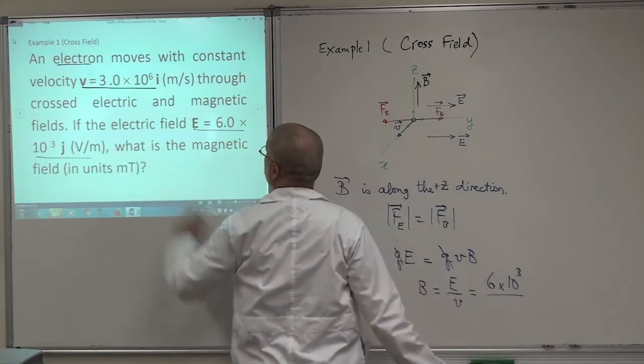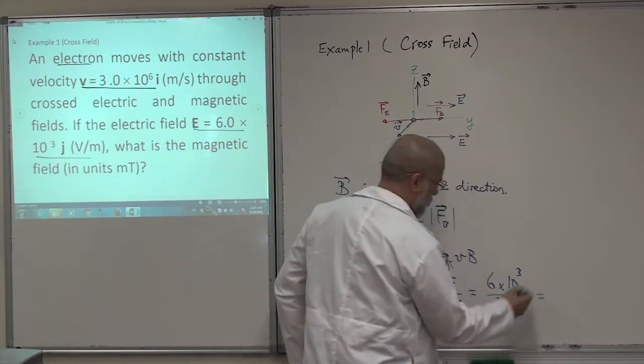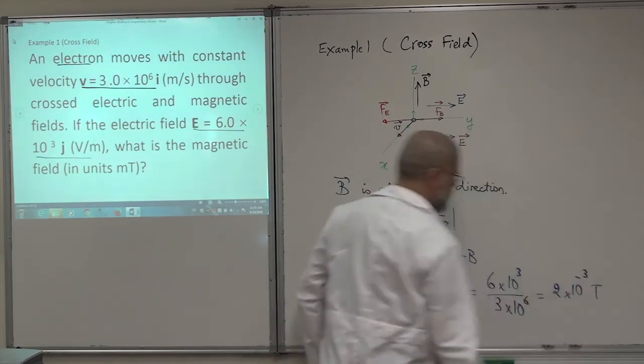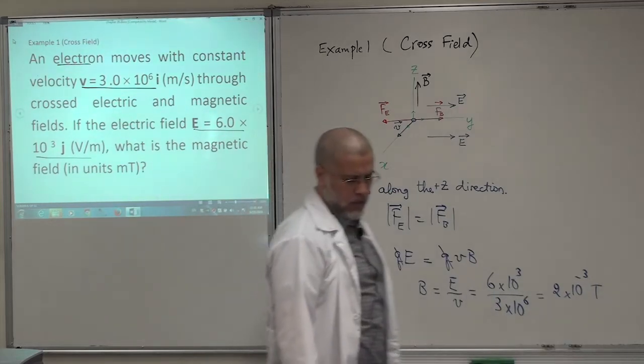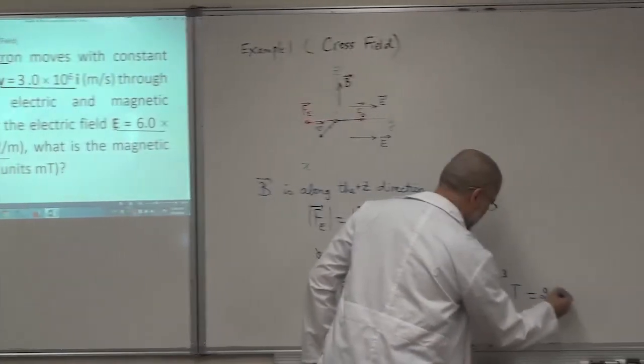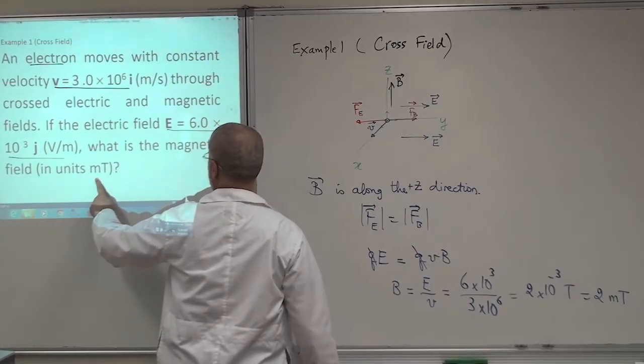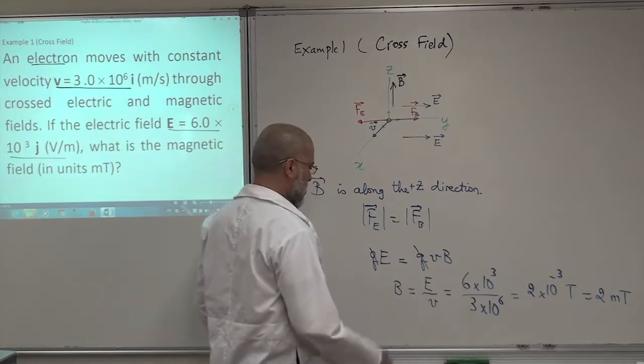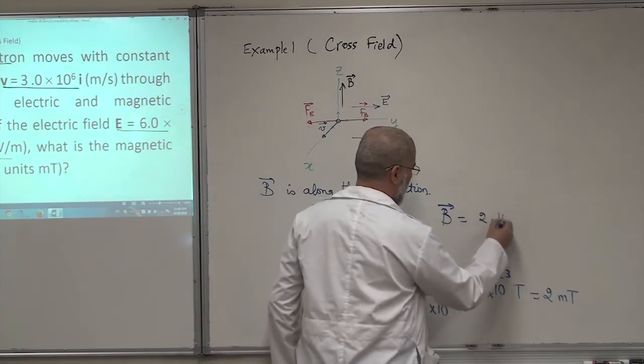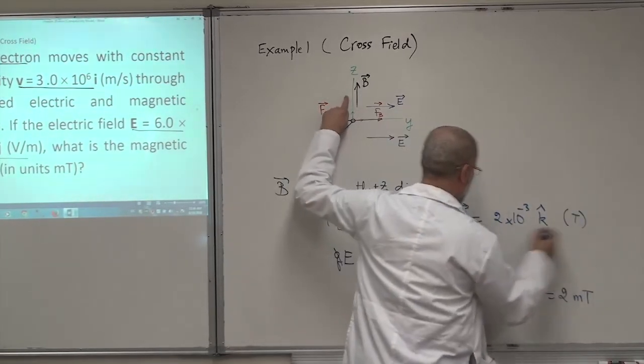And the magnitude of V is 3 times 10^6. So this will be 2 times 10^-3 Tesla. That's the units. Or if you want to write it in milli-Tesla, this will be 2 milli-Tesla, as he's asking about the units of the magnetic field in units of milli-Tesla. So if you want to write the magnetic field as a vector, it will be 2 times 10^-3 K, positive K. And then here you write Tesla like this.